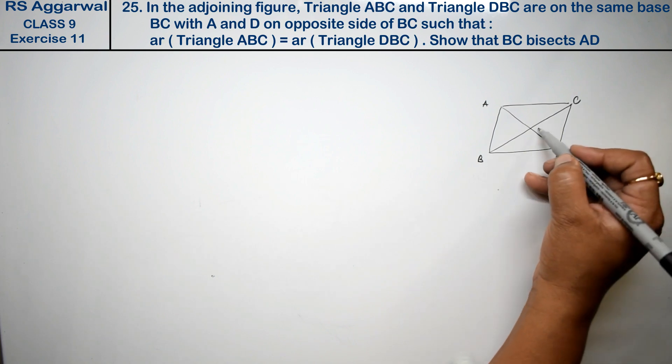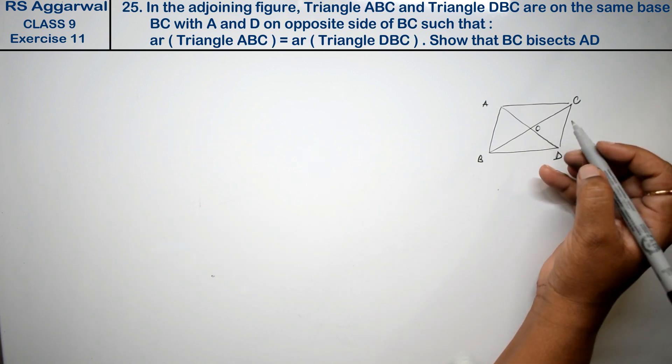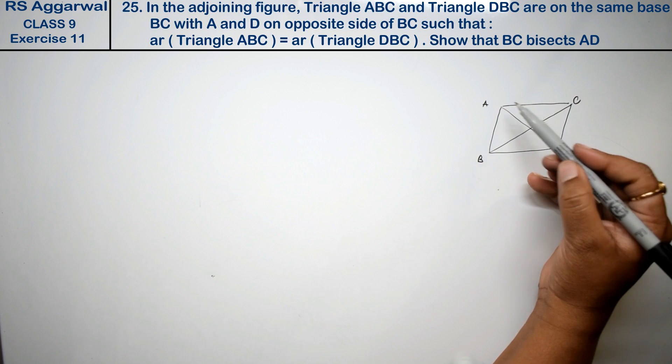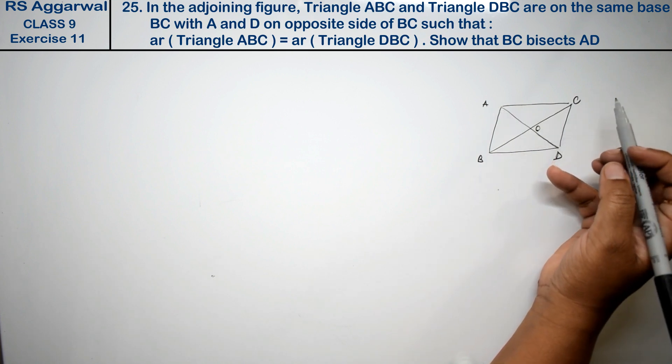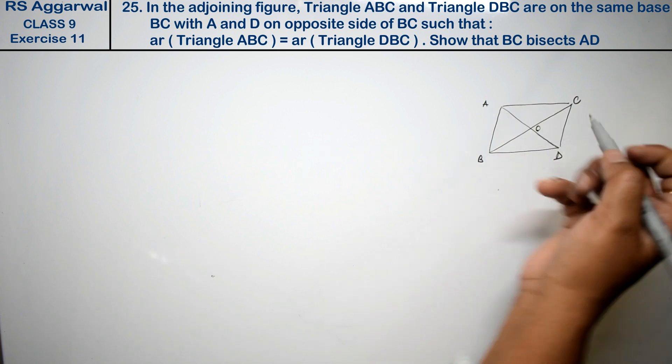If I take O point, we have to show that BC bisects AD. So how do we show? What is given?